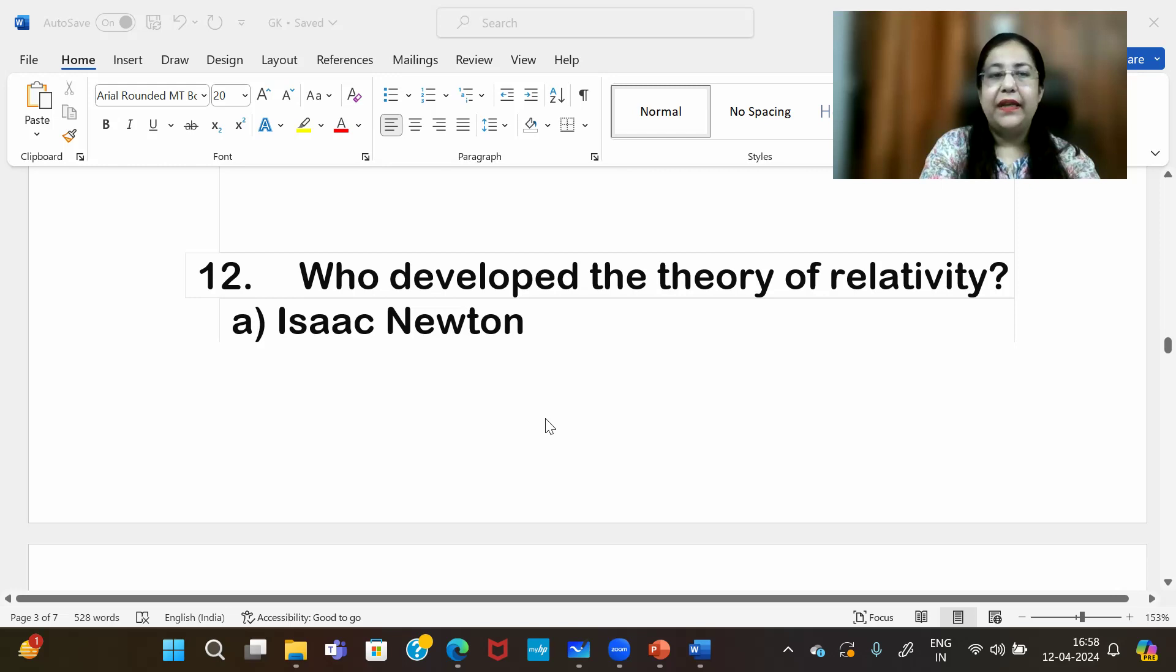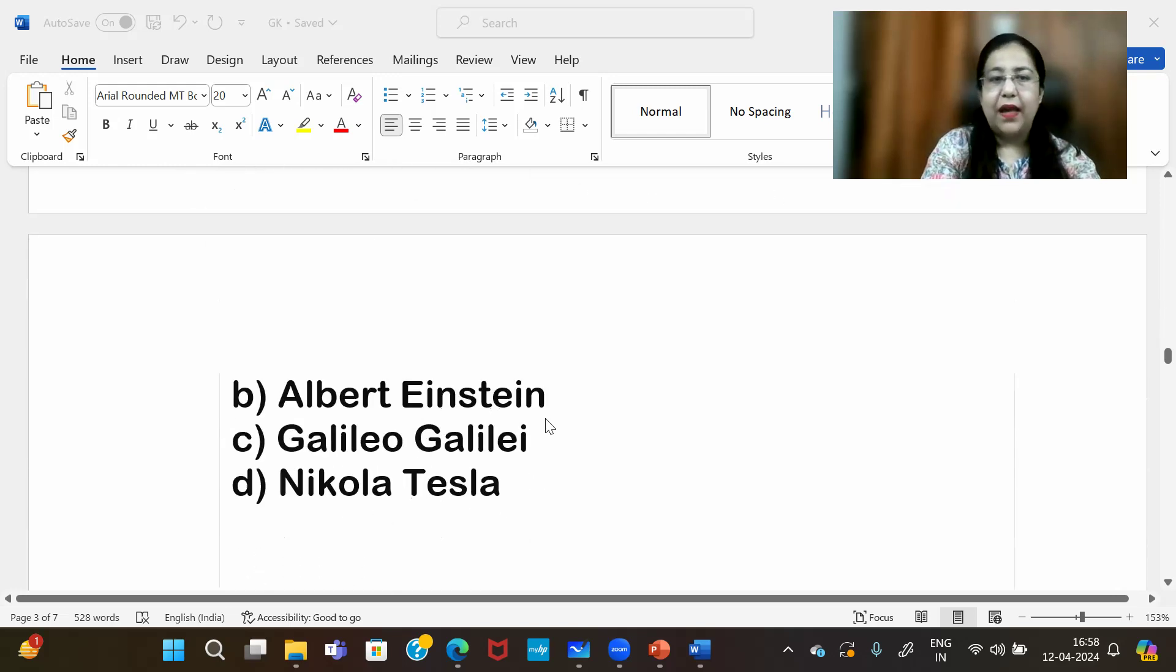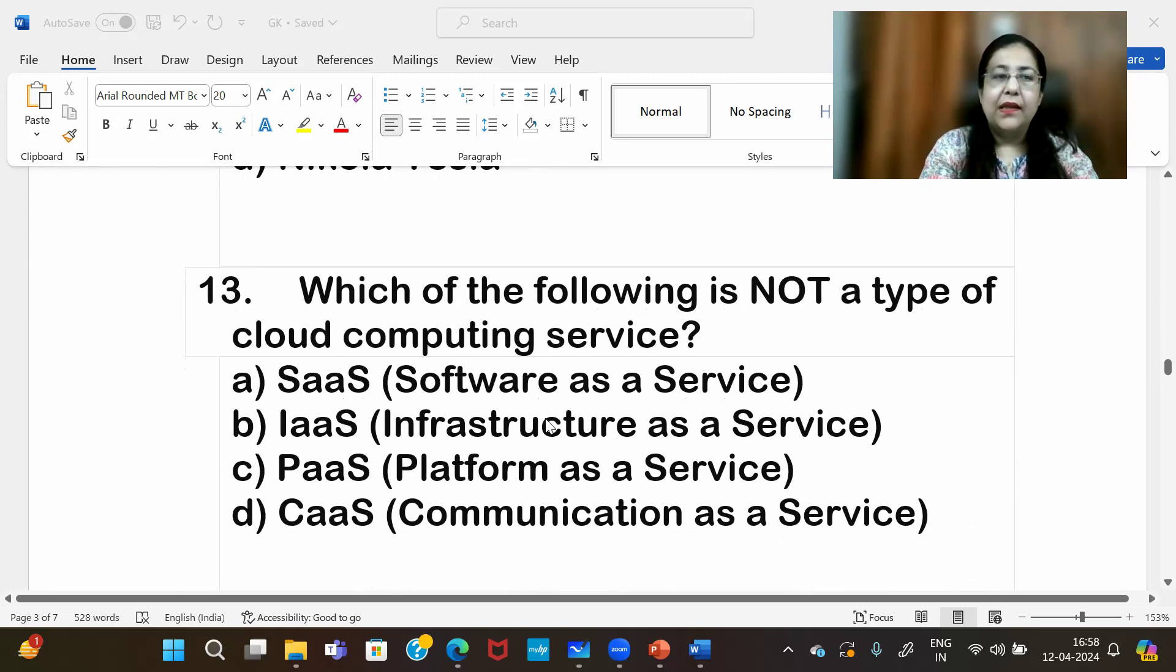Who developed the theory of relativity? That is Albert Einstein, again, who is the father of modern physics.